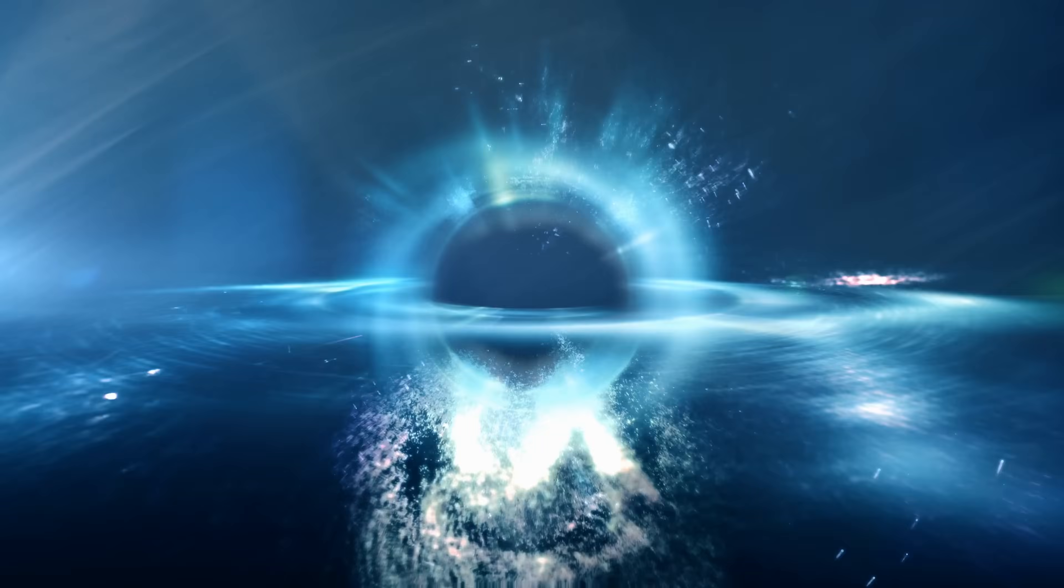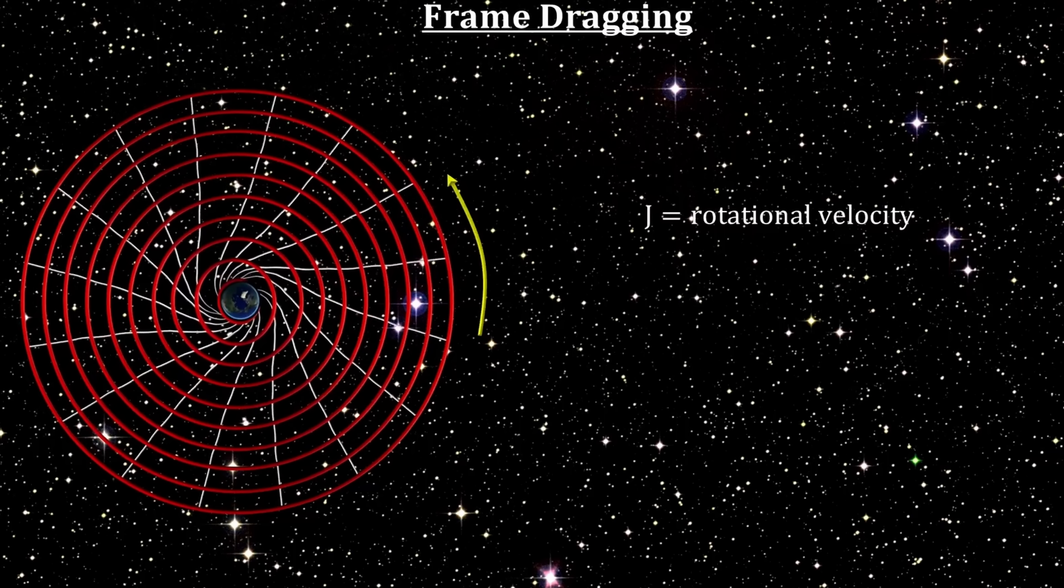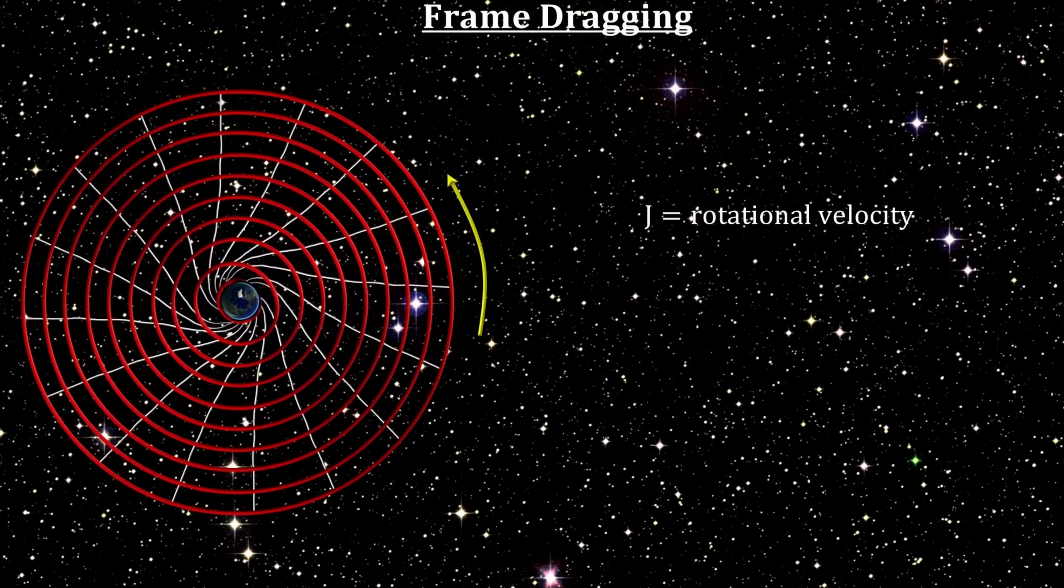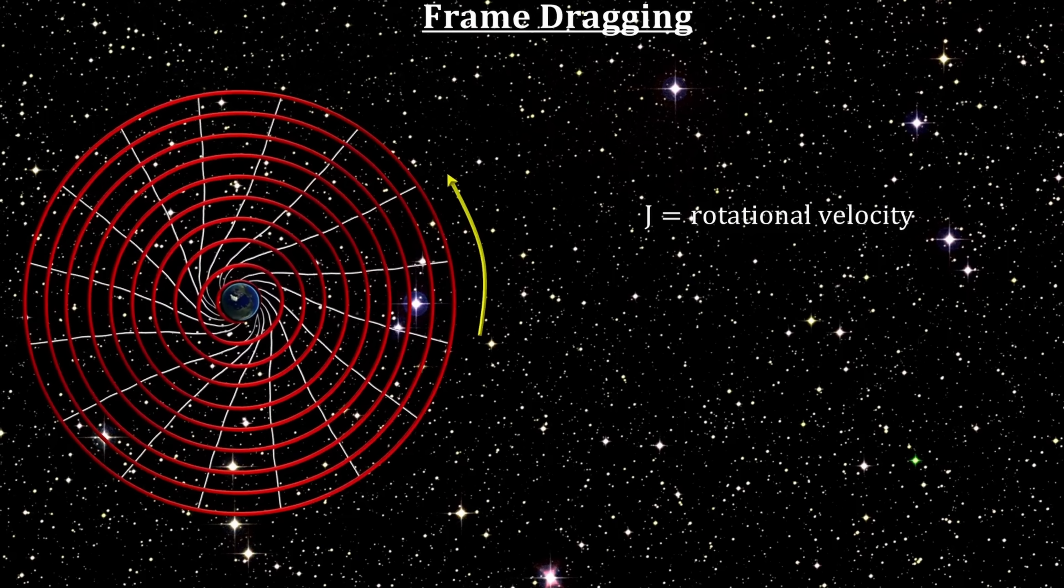And if you have a really massive object, especially a spinning object, so for example a really massive black hole, it does not just sit there, it actually starts dragging the surrounding space along with it, just like you see in the simulation.